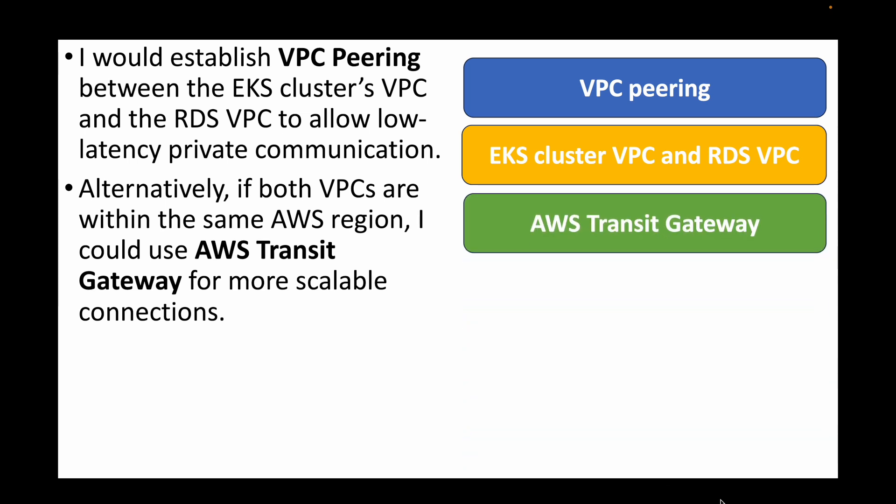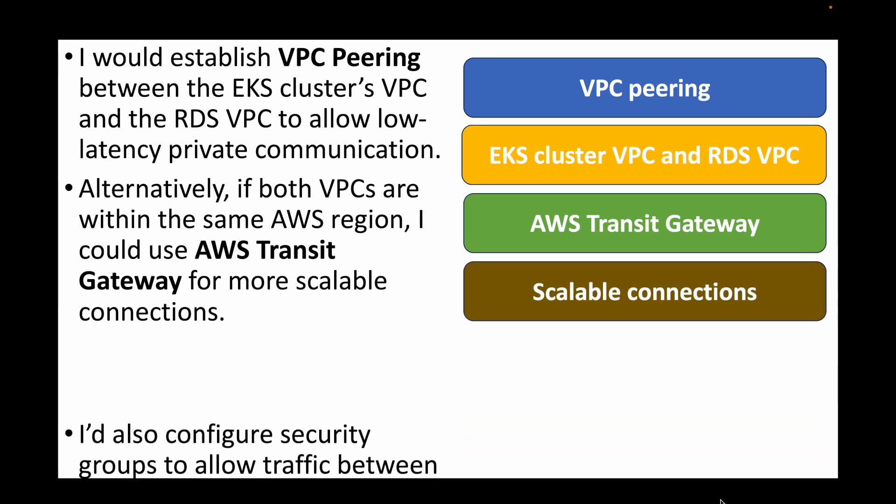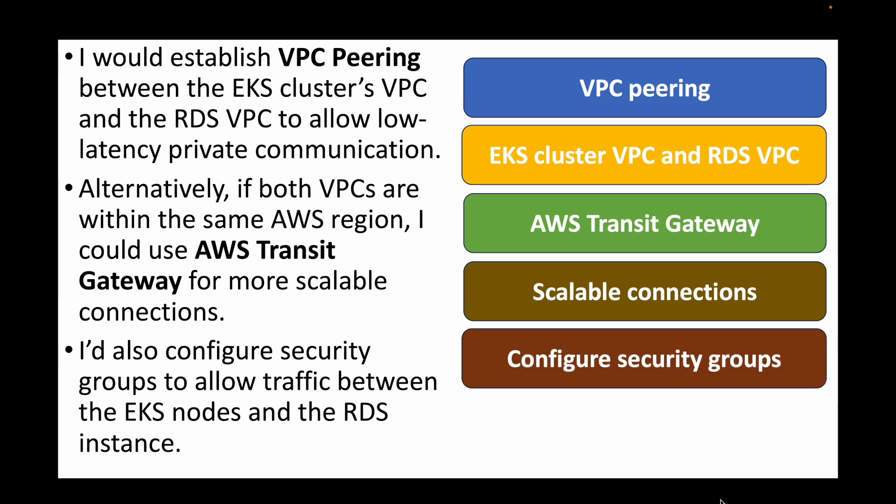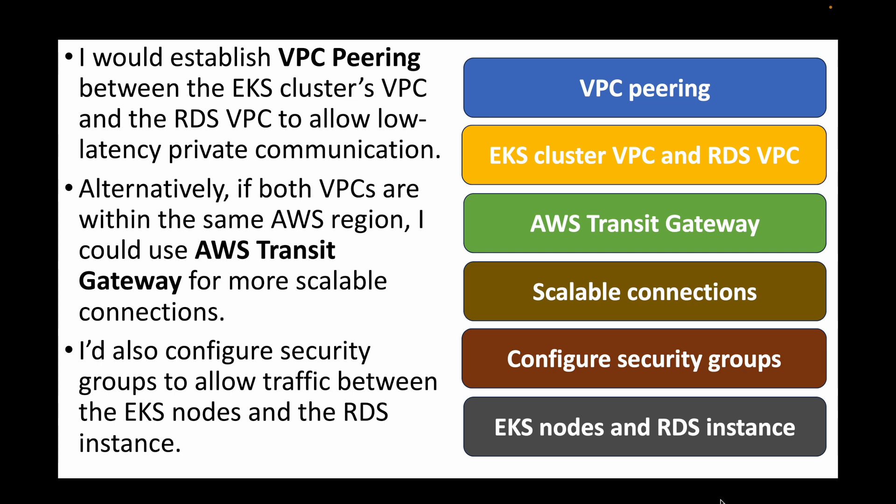Alternatively, if both VPCs are within the same AWS region, we can make use of Transit Gateway to set up a scalable connection between them. We can also configure security groups to allow traffic from the EKS nodes to the RDS instance and vice versa — routing the traffic and setting up the firewalls — but the first step is to establish connectivity between both VPCs.